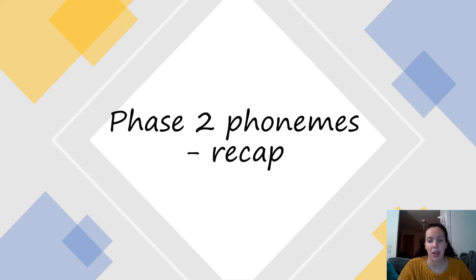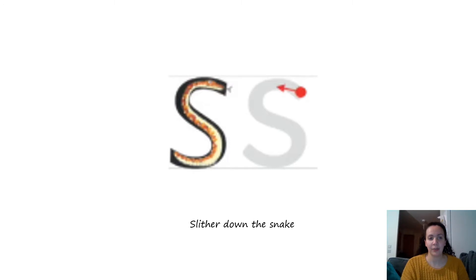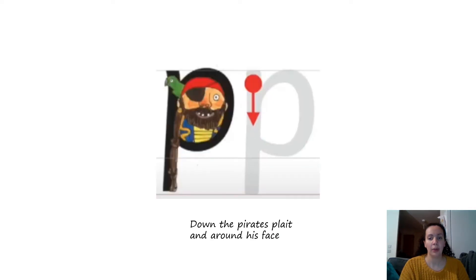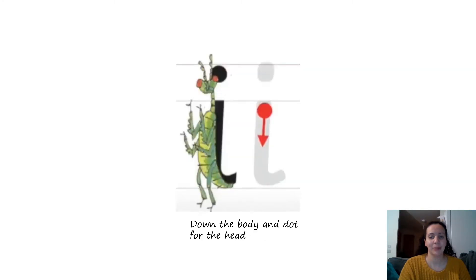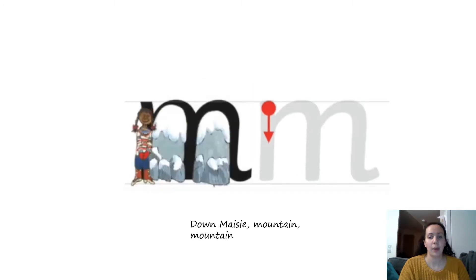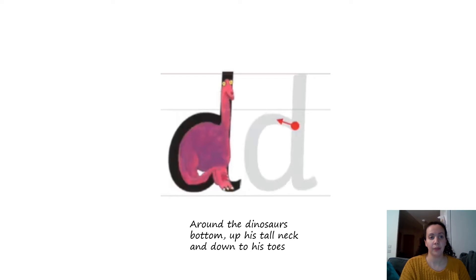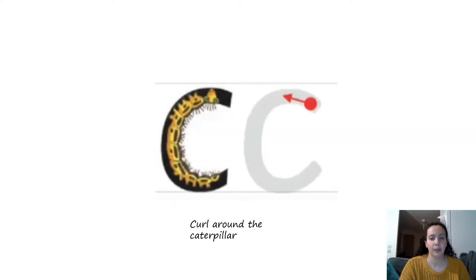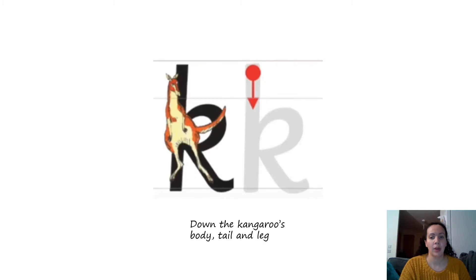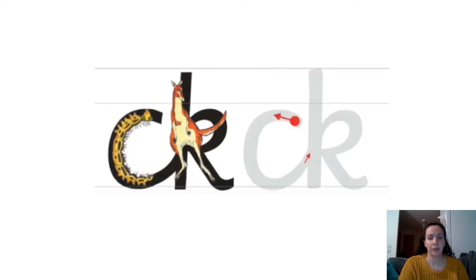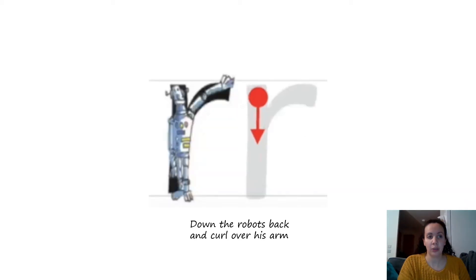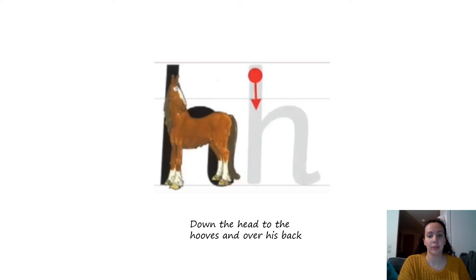Okay, we're going to begin by recapping the phase two phonemes that we've already learned. Let's say: I, N, D, G, O, K, E, A, R, H, B.